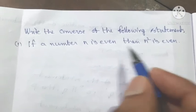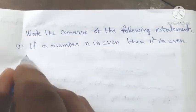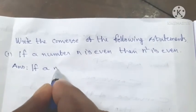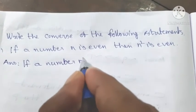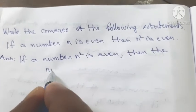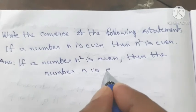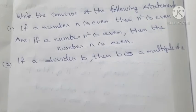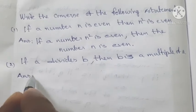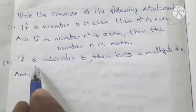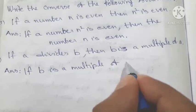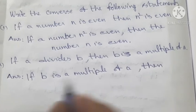Write the converse of the following statements. If a number n is even then n squared is even — the converse is: if n squared is even then n is even. If a divides b then b is a multiple of a — the converse is: if b is a multiple of a then a divides b.